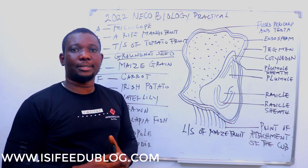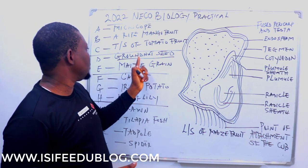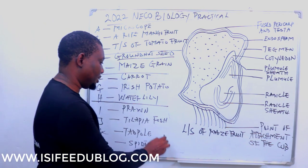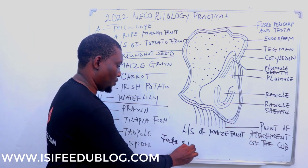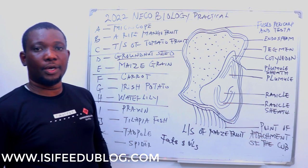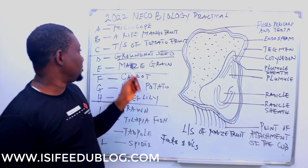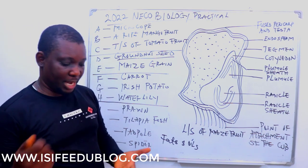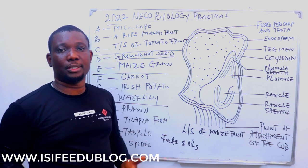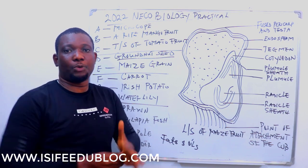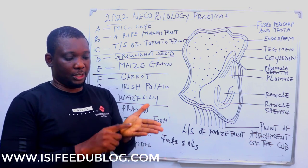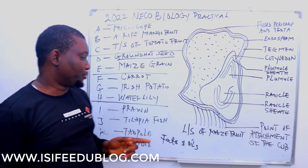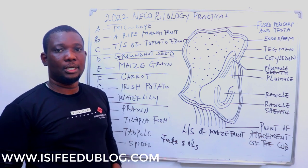The examiner will ask: what food class does specimen D belong to? The food class is fats and oils. To confirm that specimen D is fats and oils, you are going to smell the groundnut seed — use your hand or squeeze it on a filter paper. If you squeeze it on filter paper, you are going to see a translucent mark on the paper, which confirms the presence of fat and oil.